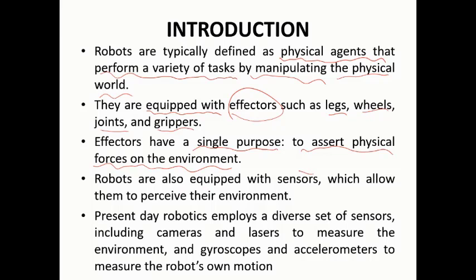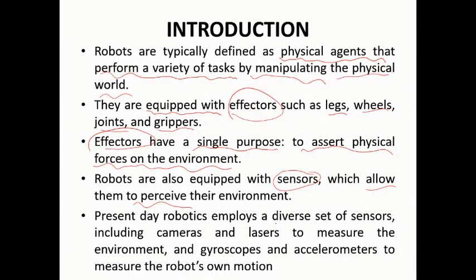Every robot has both effectors and sensors. Sensors allow the robot to perceive something from the environment. Modern robots employ a diverse set of sensors — recently we have many types of sensors available which are utilized inside robots.